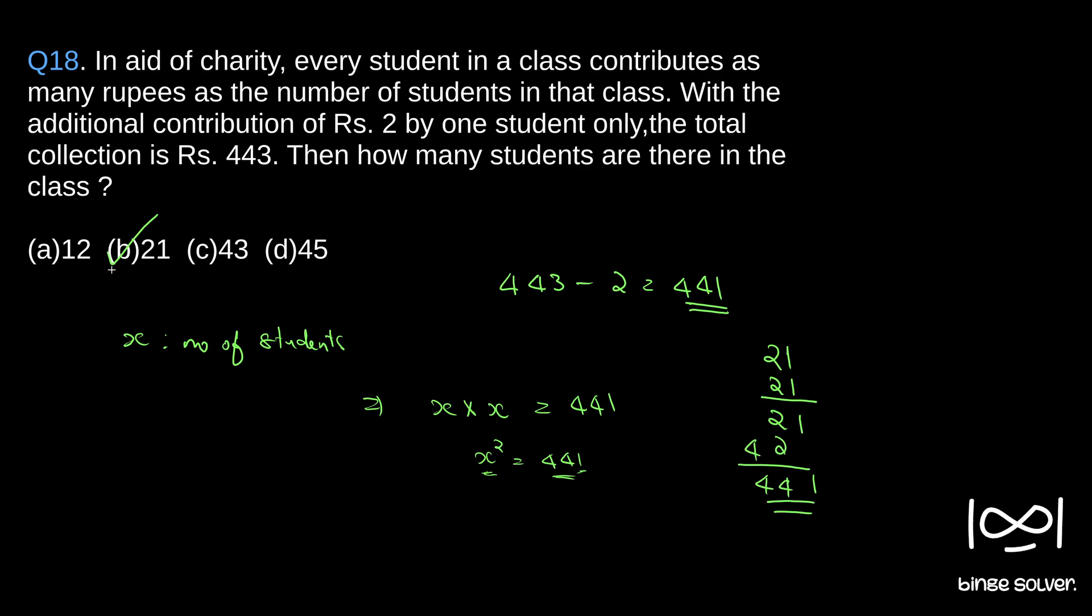The solution is b, 21. So I hope you understood. Each person contributes x rupees, so x into x is the total money they raised. So x square is 441. 441 we got by subtracting 2 from 443. The solution to question 18 is b.